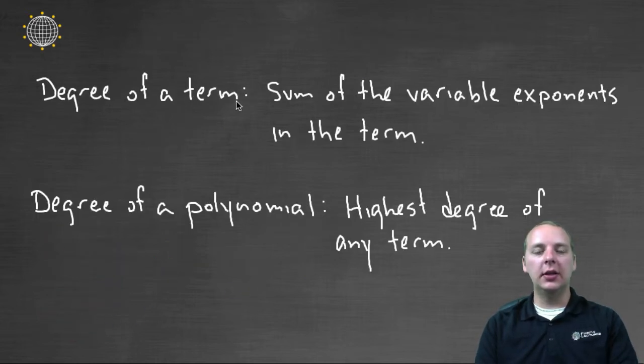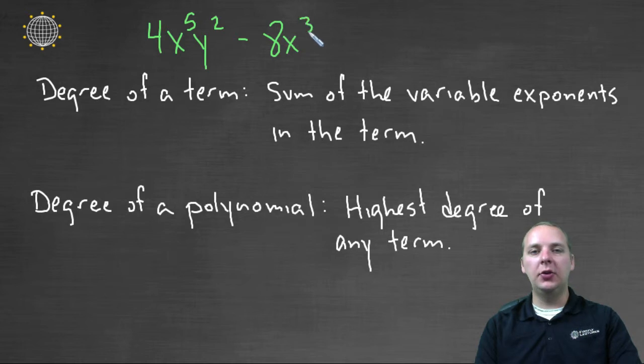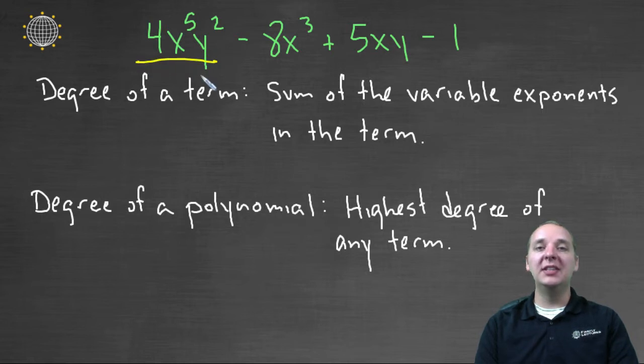Let's look at an example: 4x⁵y² - 8x³ + 5xy - 1. Now let's talk about the degree of each of these terms. This first term would have degree 7. Why would it have degree 7? Well x⁵ and y², 5 and 2 make 7. It's the sum of the variable exponents. The 4 has no bearing on this term's degree. The second term is just a single variable, so of course the degree of the second term would be 3.